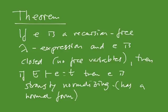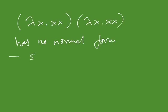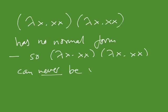This also tells us that some expressions cannot be well-typed. For instance, lambda x . (x x) applied to lambda x . (x x) has no normal form — so this expression cannot be well-typed no matter which type environment we pick. The simply typed lambda calculus is interesting, but also a bit limited, and in the next part of the pencast I'll return to that.